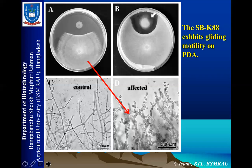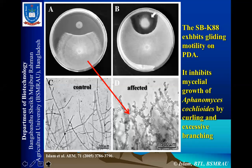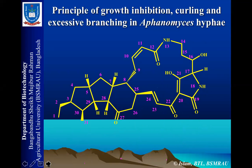To search for this compound, we used large-scale fermentation — we cultured SBK818 in a big fermenter — and then extracted with ethyl acetate. After extraction with ethyl acetate, we used different chromatographic methods and finally discovered that this macrocyclic lactam antibiotic is involved in growth inhibition, curling, and excessive branching in Aphanomyces hyphae. It was a new antibiotic and the active principle of growth inhibition by SBK818 against Aphanomyces cochlioides.